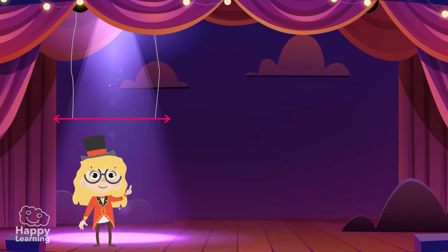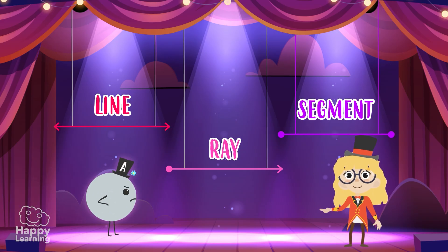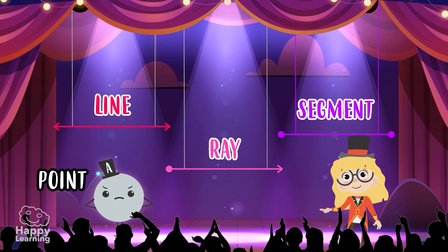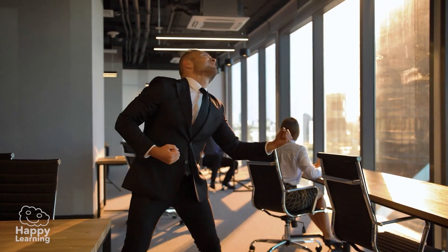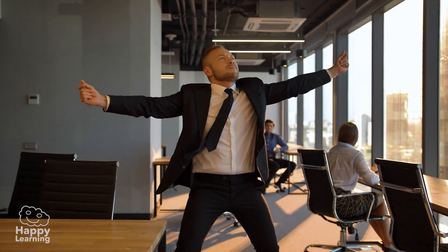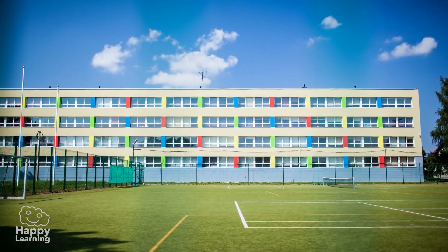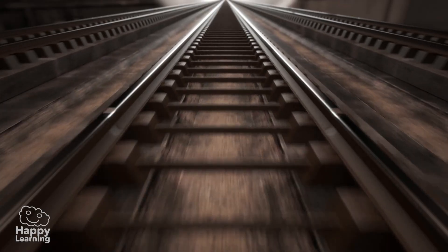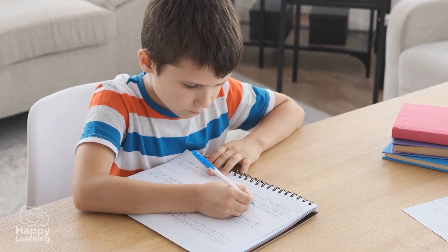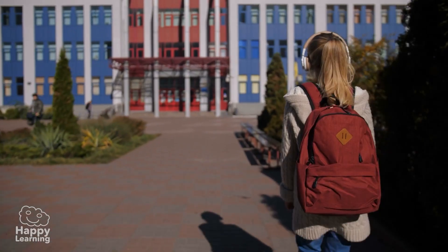We've already met the line, the ray, and the segment — and the point, of course. Remember at the beginning I said that this trio was everywhere? Look: on the line that divides the land from the sea, on the edge of buildings, on the train tracks, on the lampposts, on the lines of a notebook. Wherever you look, there are lines, rays, and segments.